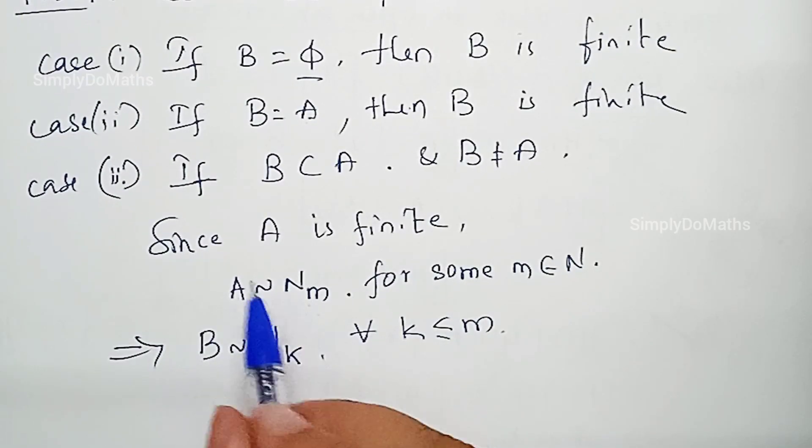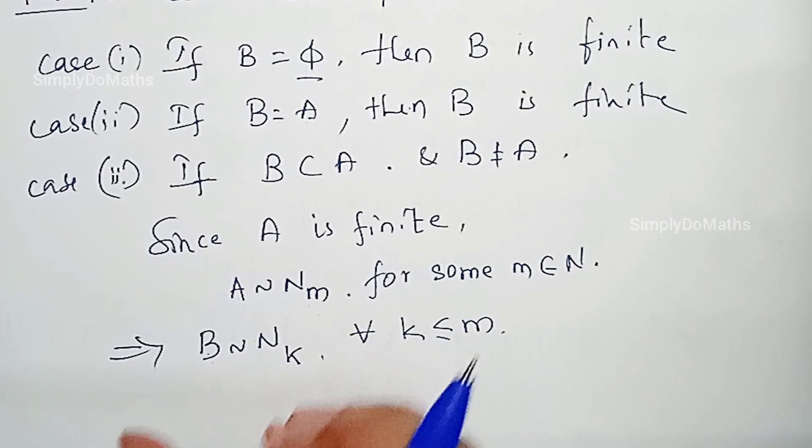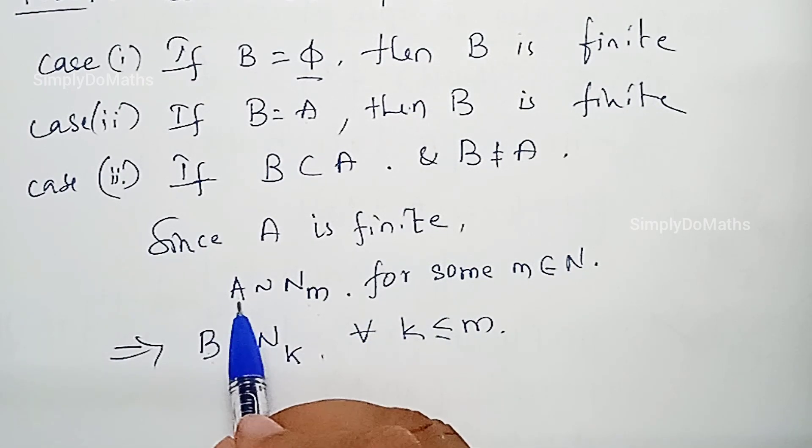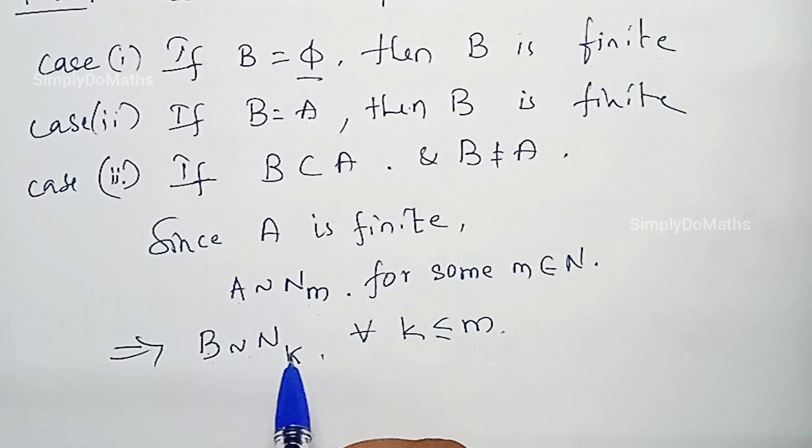Because B is a subset of A, B will contain some lesser amount of elements compared to A. So B is also equivalent to N_k up to k elements, but k will be less than m.